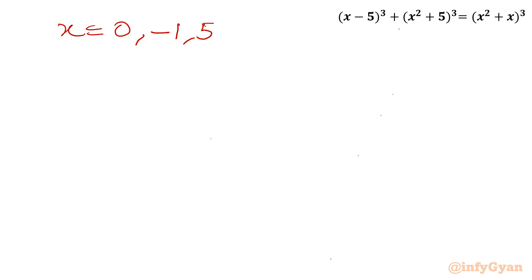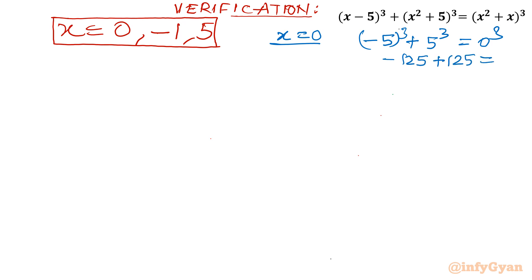Let's find out the verification for x = 0. So it will become (-5)³ on left hand side, and on right hand side 5³. -125 + 125 = 0, which equals 0. So 0 = 0.